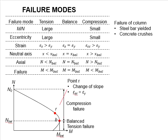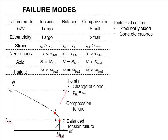On the axial load versus moment curve, there is a point R. It represents the start of the change in slope of the curve. This normally happens when the compression steel has reached its strength limit and undergoes yielding.